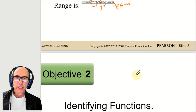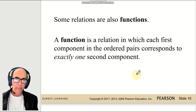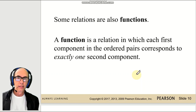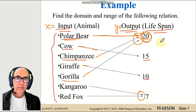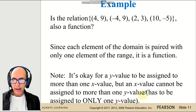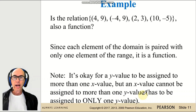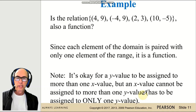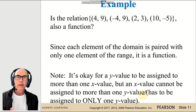Now, the definition of a function: a function is a relation in which each first component in the ordered pair corresponds to exactly one second component. Each animal has one and exactly one lifespan — not two, not three, only one. Functions are very important in daily life. For example, the steering wheel of a car: when it goes left, you want the car to go left; when it goes right, you want the car to go right. That is an example of a function.